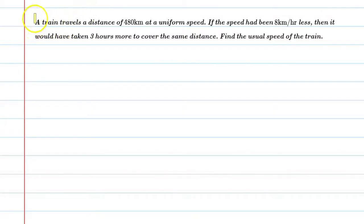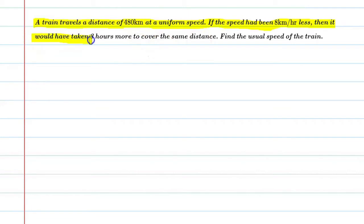Hello students, let's solve this question. A train travels a distance of 480 km at a uniform speed. If the speed had been 8 km per hour less, then it would have taken 3 hours more to cover the same distance. Find the usual speed of that train.